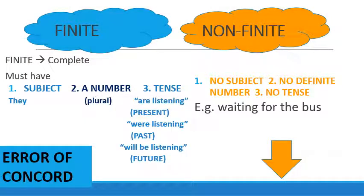The next thing we want to talk about is the difference between a finite and a non-finite verb. The word finite sounds like finished, so this means it's a verb that actually seems to be complete. How do we know a verb is complete? It has to have a subject, a number, and a tense. By subject, we mean we understand who or what is performing the action. By number, we mean it's either singular or plural — is it only one person performing the action or are there two? By tense, we mean are we talking about present tense, past tense, or future tense — is it happening now, has it happened already, or will it be happening?